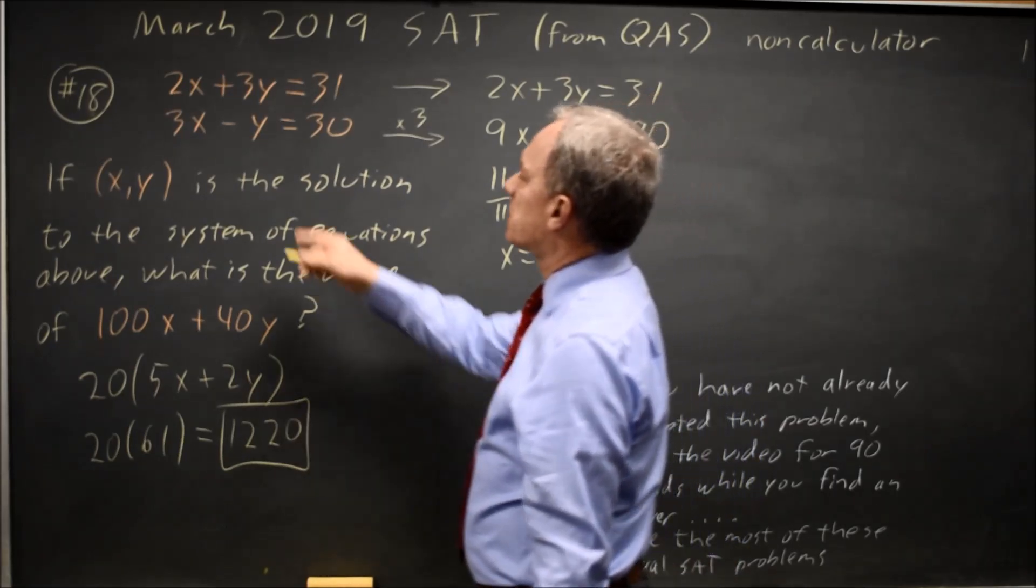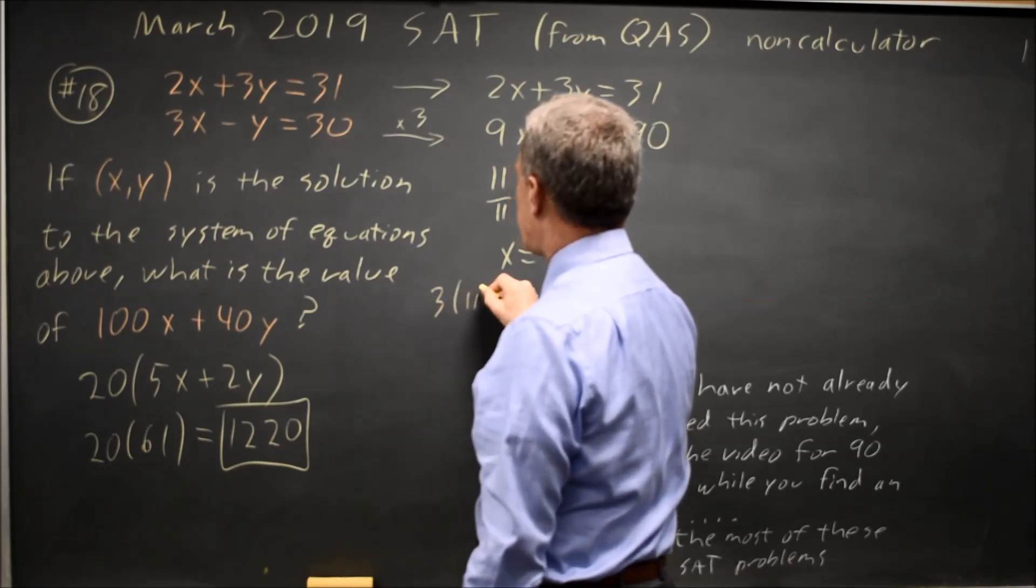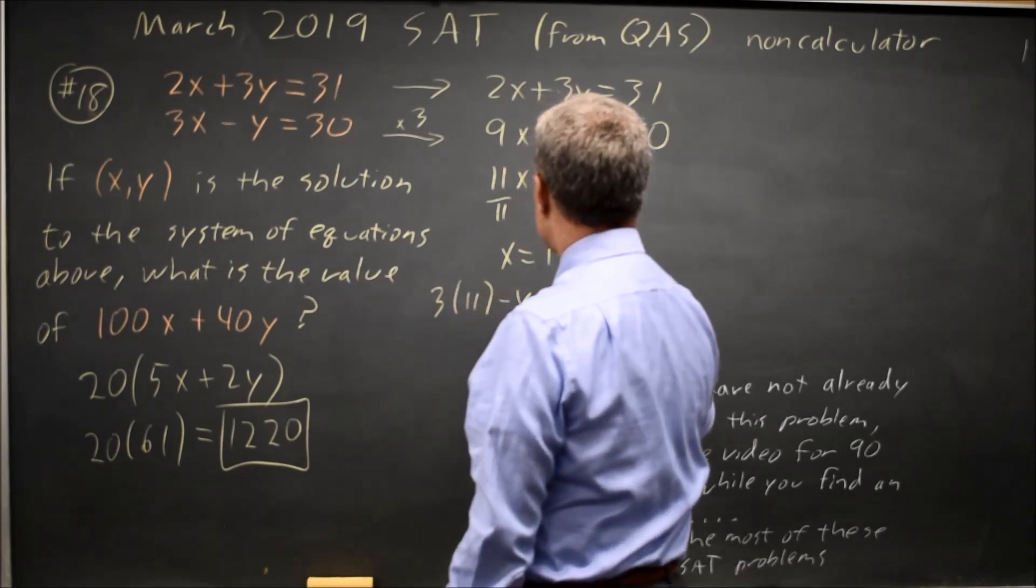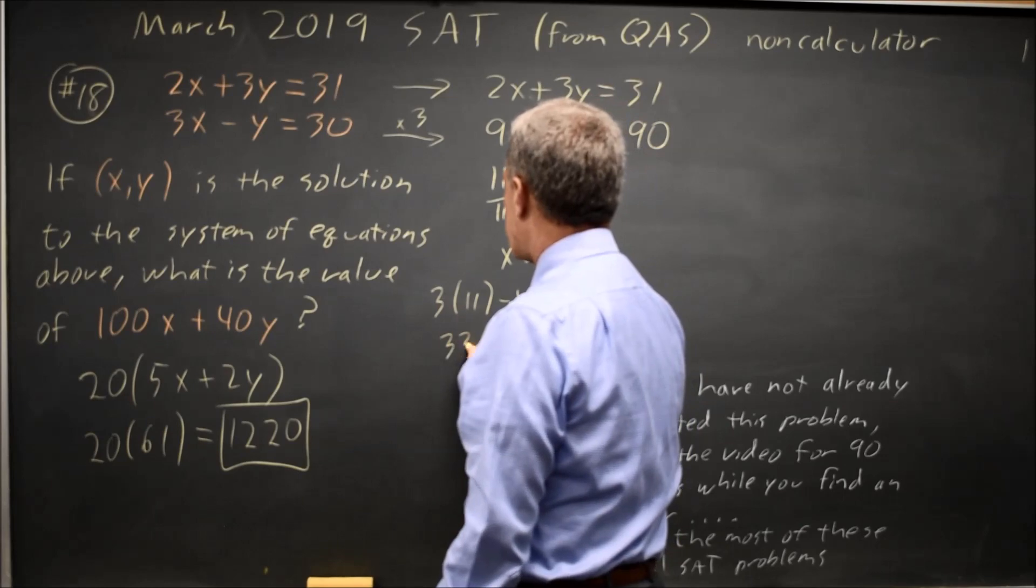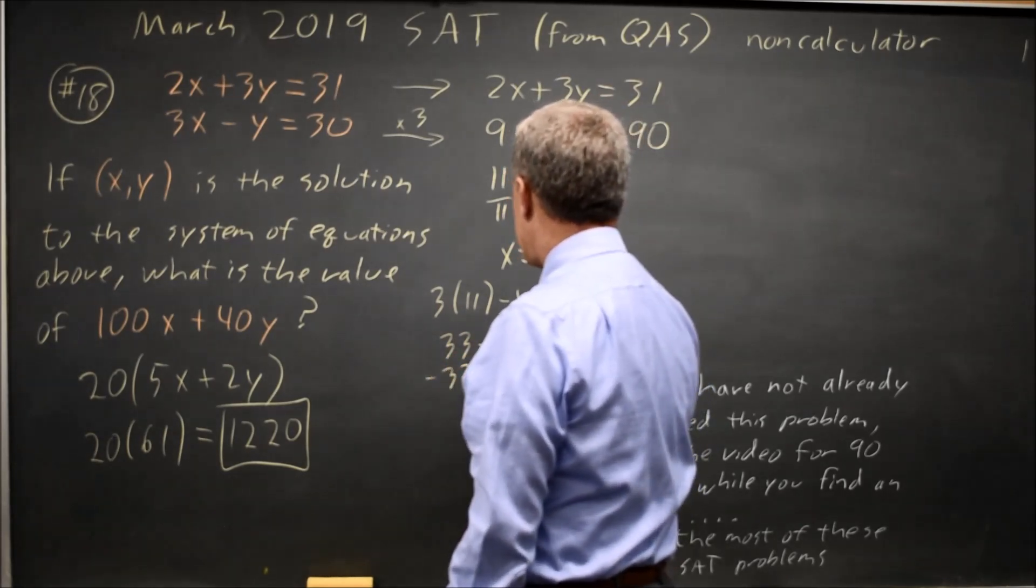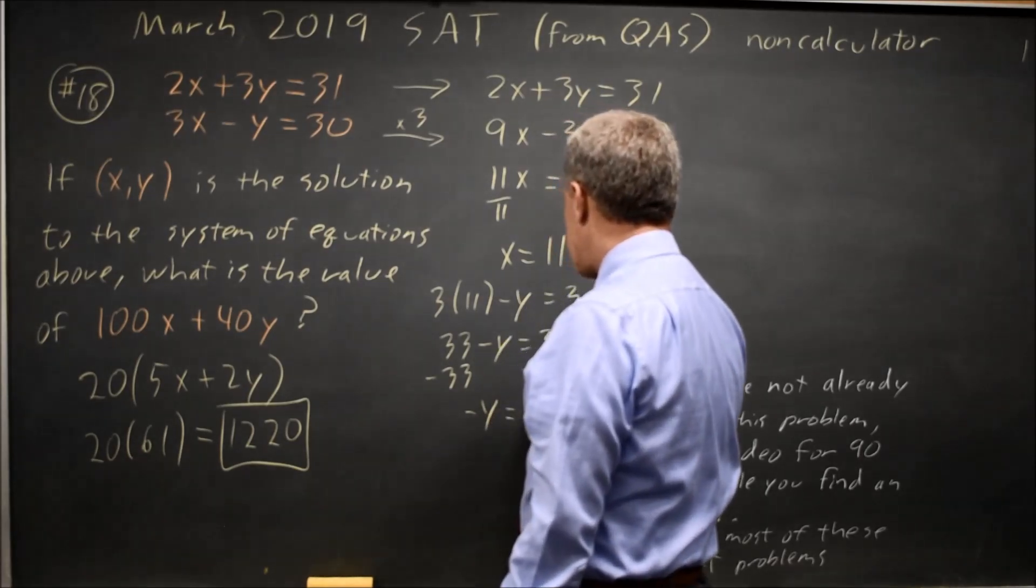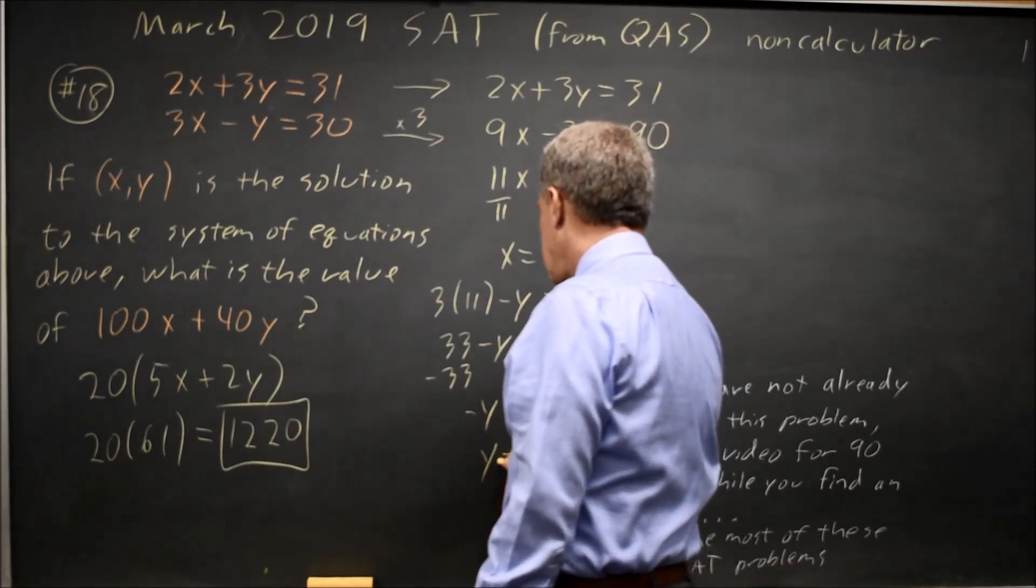Now that I have X, I can solve for Y in either equation. 3X is 3 times 11 minus Y equals 30. 33 minus Y equals 30. So subtract 33 from both sides. Negative Y equals 30 minus 33 is negative 3. So Y equals 3.